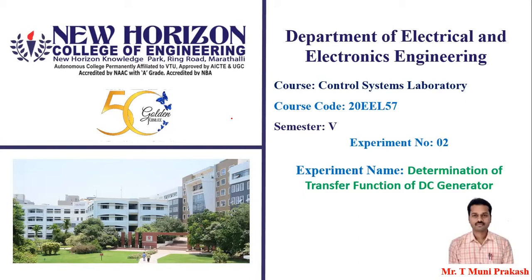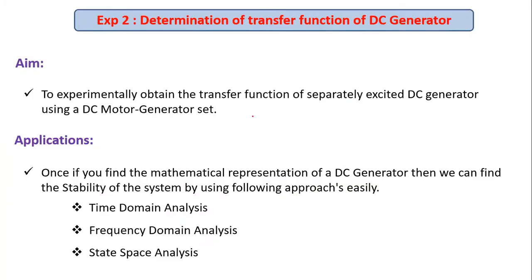Welcome to online lectures on control systems laboratory. In this video we will see how to find the transfer function of a DC generator experimentally. The aim of the experiment is to experimentally obtain the transfer function of a separately excited DC generator using a DC motor-generator set.